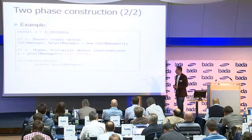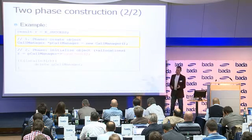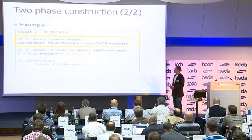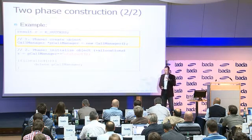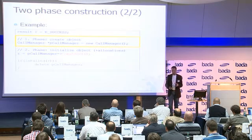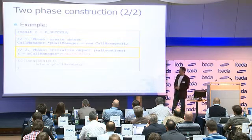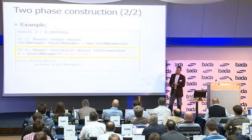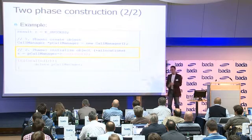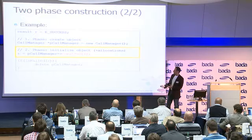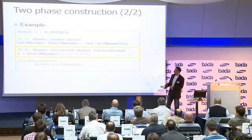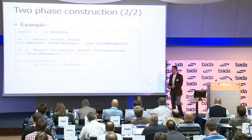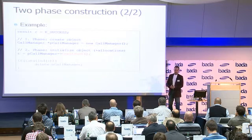As an example: in the first phase we just create an object of type `CallManager`. In this first phase, no memory is allocated for member variables, so nothing can go wrong. In the second phase we actually construct and initialize the object, which means memory is allocated. If something goes wrong, we get the exception stored in our variable R, and we can then check R and take the appropriate actions.